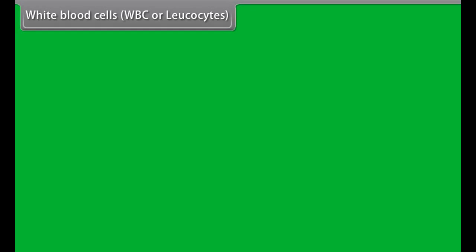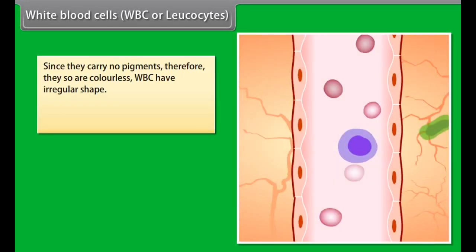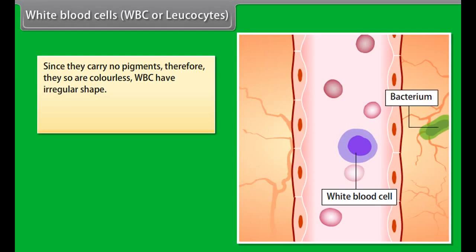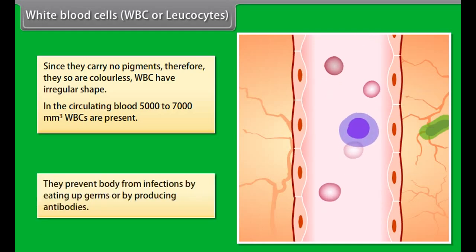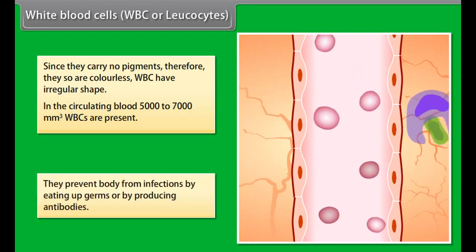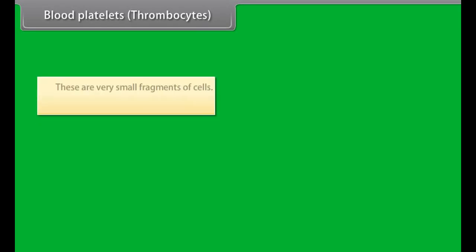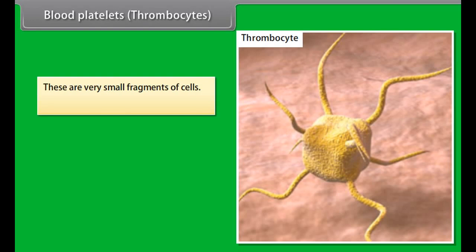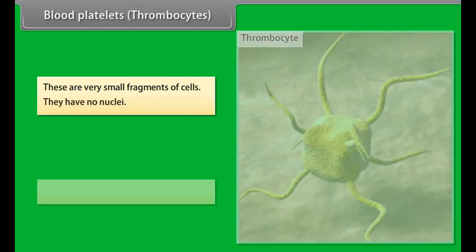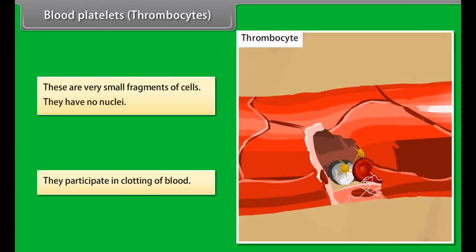White blood cells, or leukocytes, carry no pigments and are therefore colorless. In circulating blood, 5,000 to 7,000 WBCs per mm³ are present. They prevent the body from infections by consuming germs or by producing antibodies. Blood platelets, or thrombocytes, are very small fragments of cells with no nuclei, and they participate in the clotting of blood.